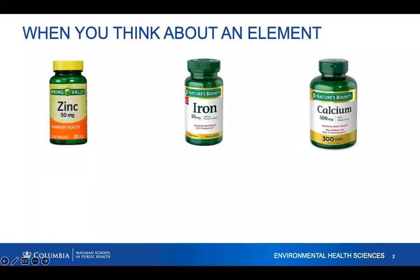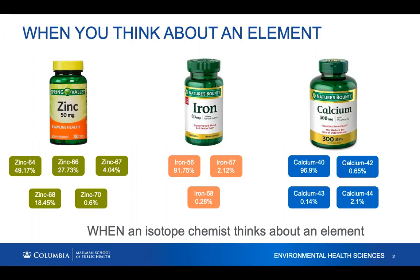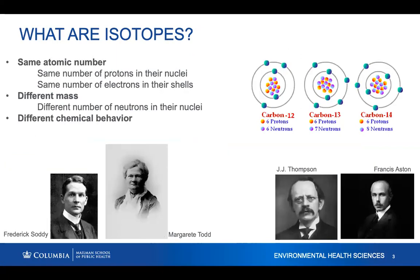When we think of an element — these are all essential metals we need: zinc, iron, calcium — you can see the supplements in any pharmacy or grocery store. But when I as an isotope chemist think of these elements, I see them as their isotopes. Zinc has five stable isotopes, iron has three, and calcium has four. What happens when we take those supplements with their particular isotopic composition?